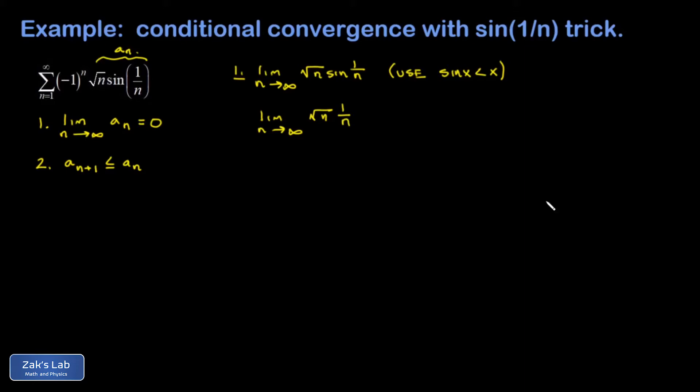When we simplify, we get the limit as n goes to infinity of 1 over square root n, which unambiguously goes to 0. If the terms in this limit are bigger than the terms in the original limit, and yet the limit still goes to 0, then we're guaranteed our original limit goes to 0 as well. And we're done with part 1.